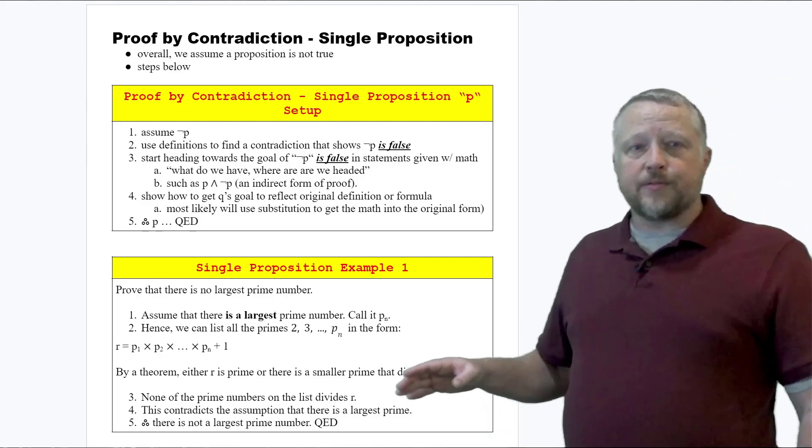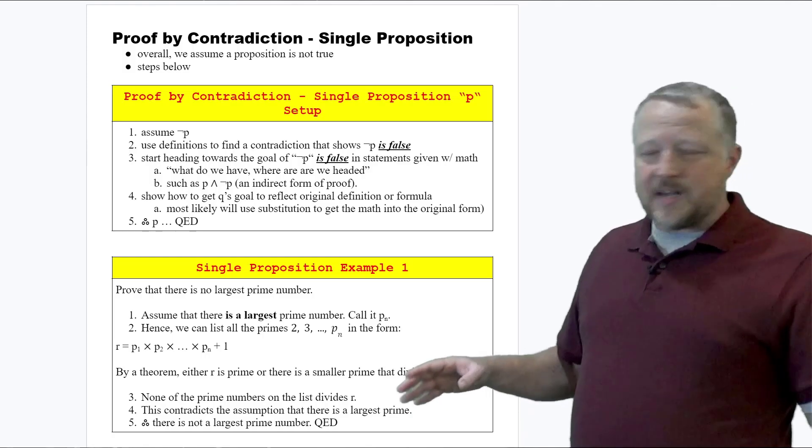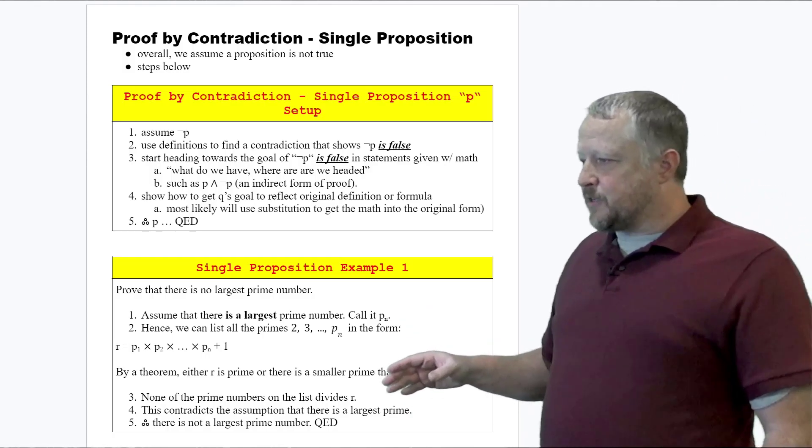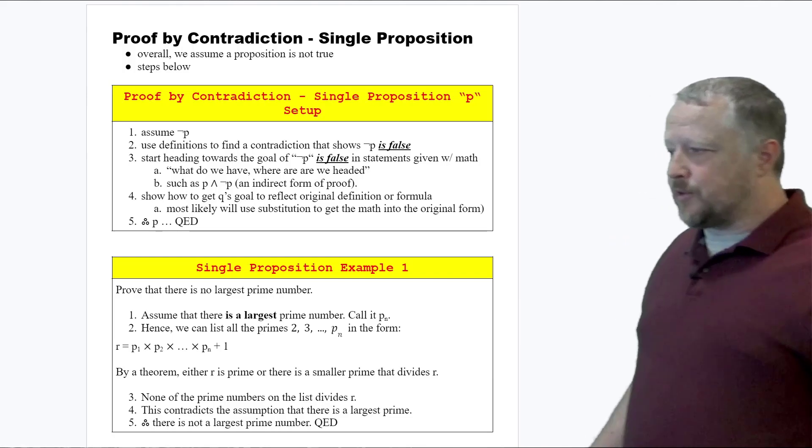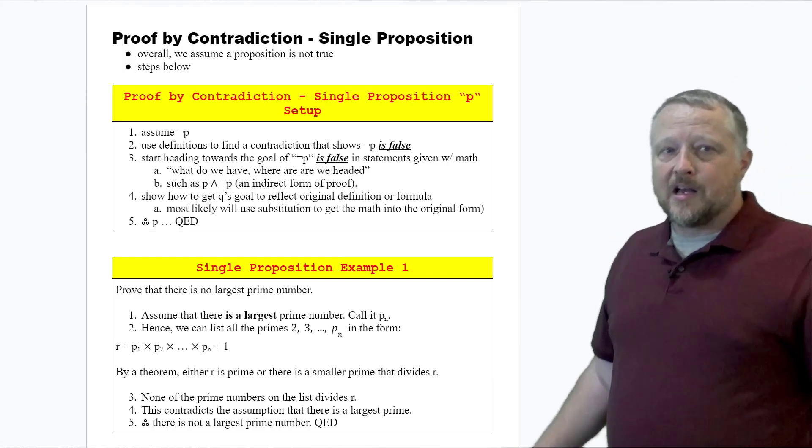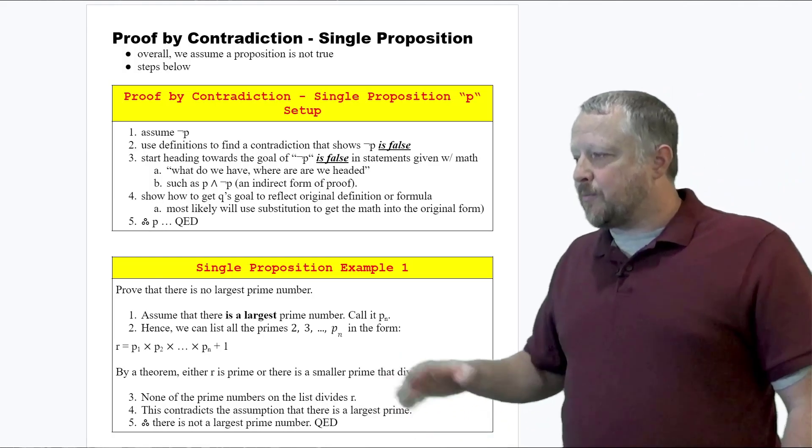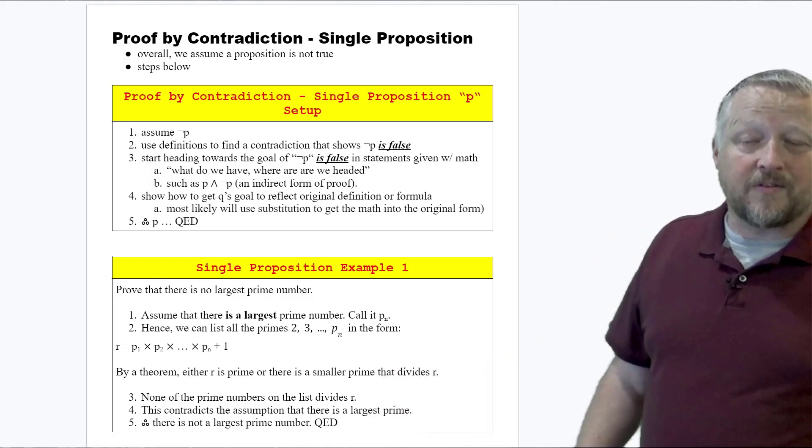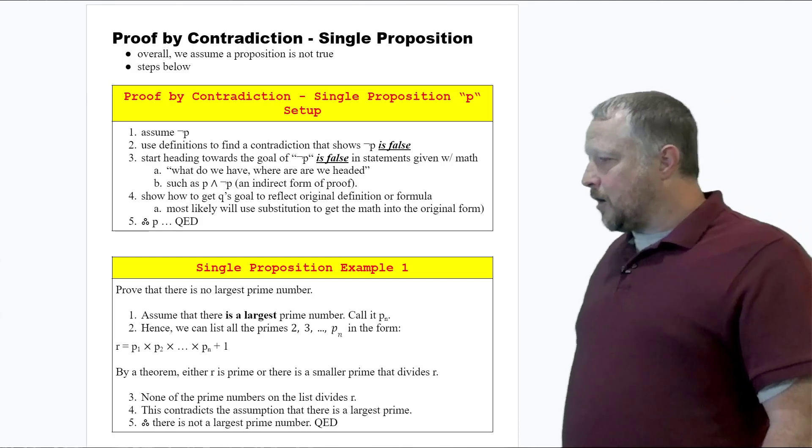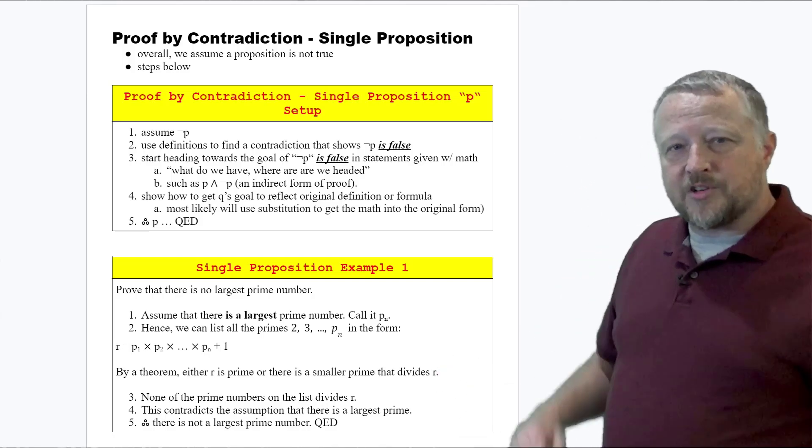In part three, we're tackling towards showing that p is false or that not p is false. None of the prime numbers on the list divide r. In step four, this contradicts the assumption that there is a largest prime. Step five wraps it up: Therefore, there is not a largest prime number. QED.